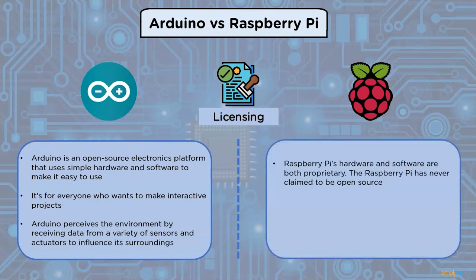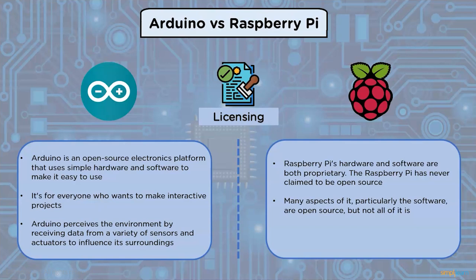Raspberry Pi's hardware and software are both proprietary. Raspberry Pi has never claimed to be fully open source. Many aspects of it, particularly the software, are open source, but not all. The Raspberry Pi has been criticized for having closed-source components.